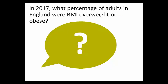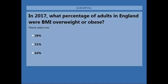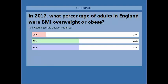In 2017, what percentage of adults in England were overweight or obese according to BMI over 25? The answer is 64% — so the majority of the English population are either overweight or obese. This data comes from the Health Survey for England. In terms of obesity specifically — a BMI over 30 — it's 27% of men and 30% of women. You can also compare over time: in 1993 it was 53%, so it's risen by 11 percentage points, which is quite shocking.